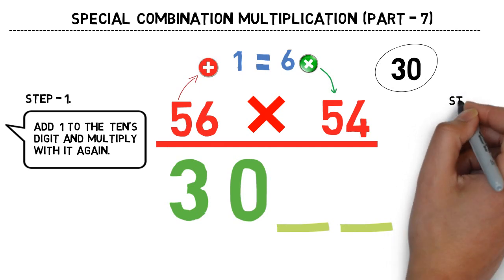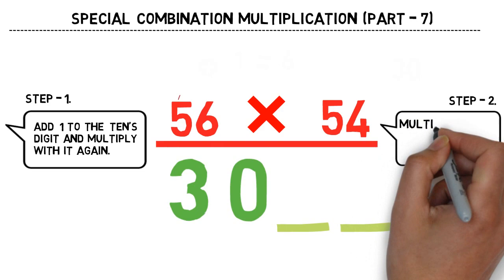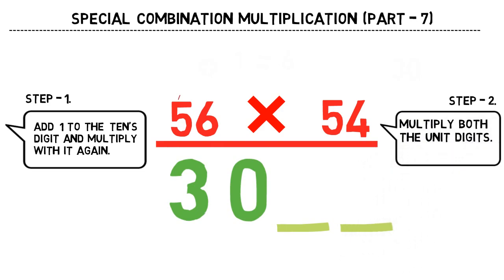So let's move on to step 2. The step 2 is directly the multiplication of unit digits. Here we have 6 and 4. The multiplication of 6 and 4 is 24. These are the rightmost digits of our answer.